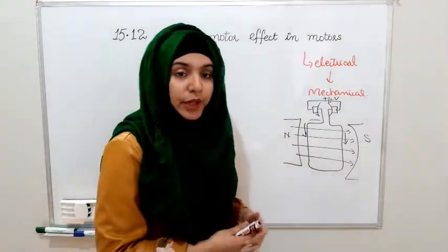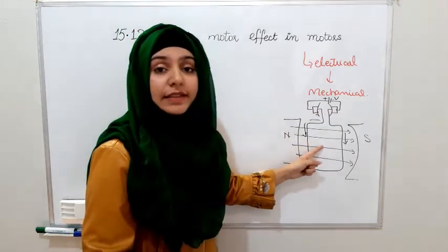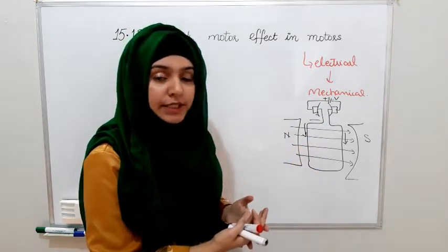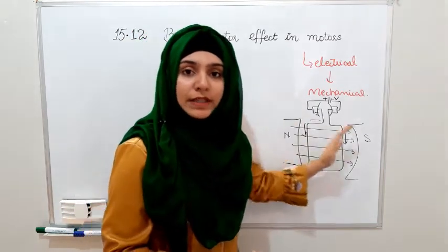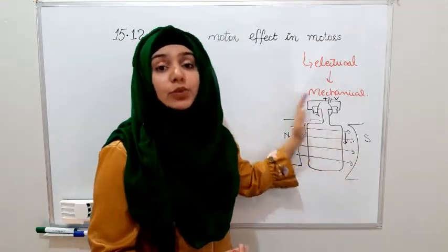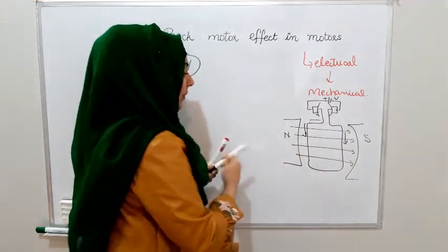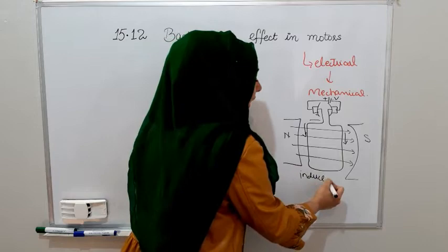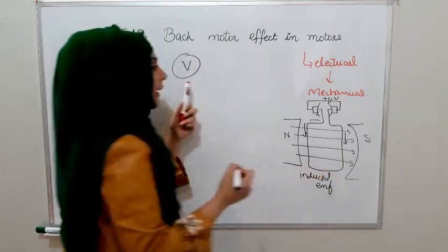When the coil rotates, the magnetic field lines passing through it change in number — sometimes more lines pass through, sometimes fewer. This means an induced EMF will be produced. And what will the induced EMF do? It will oppose its own cause. And what is the cause? It is the battery.